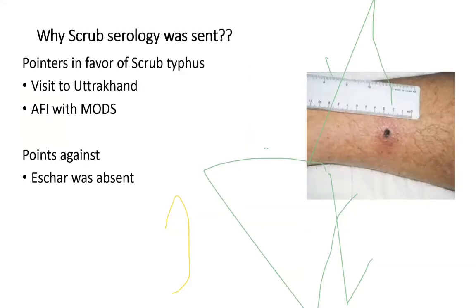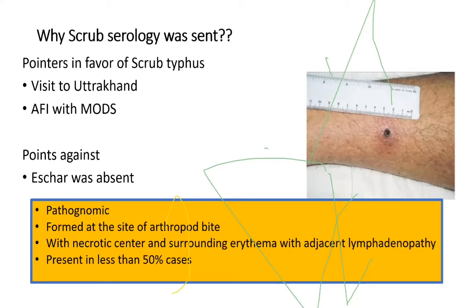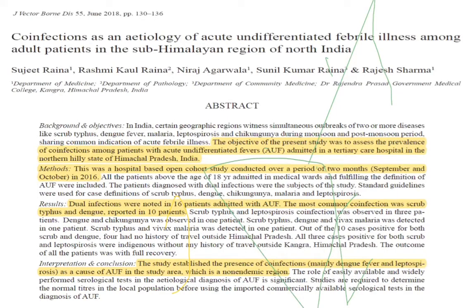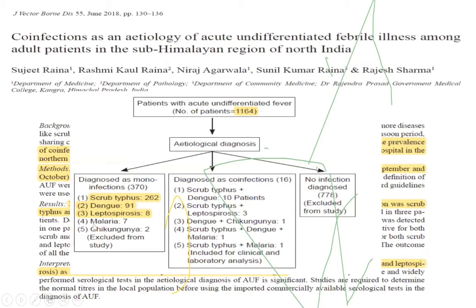Returning to our case, scrub typhus serology was also sent. The pointers in favour of scrub typhus were the patient's recent visit to Uttarakhand and presentation with AFI with multi-organ dysfunction syndrome. The point against was that the characteristic eschar, pathognomonic of scrub typhus, was absent. However, eschar may not be present in all cases — it has been seen in only less than or around 50% of cases. Reports show co-infections of AFI including scrub typhus with dengue, dengue with chikungunya, scrub typhus with leptospira, and scrub typhus with malaria.